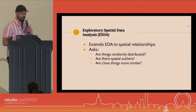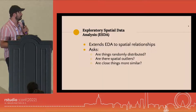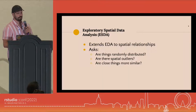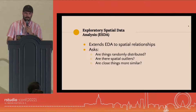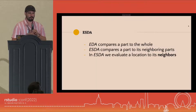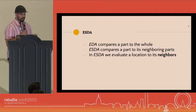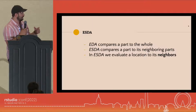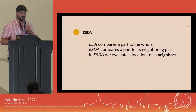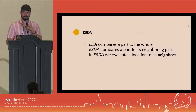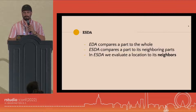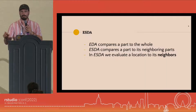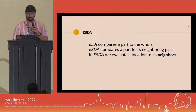ESDA asks questions like: are things randomly distributed in space? Are there spatial outliers? Are close things more similar than things that are further away? Where EDA compares a part to the whole, ESDA compares a part to its neighboring parts. In Exploratory Spatial Data Analysis, we're evaluating a location relative to its neighboring location, not the whole or group.